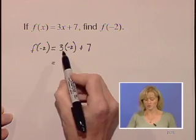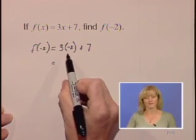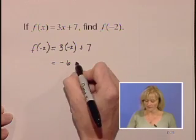Correct order of operations, we'll do our multiplication first. 3 times negative 2 is negative 6.